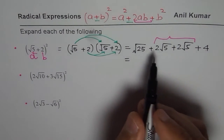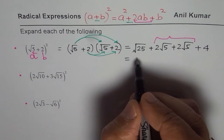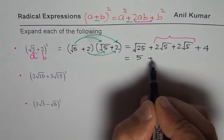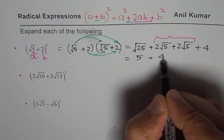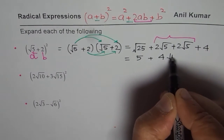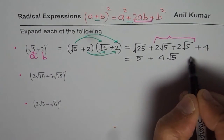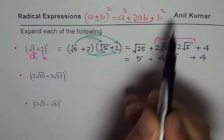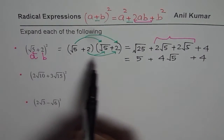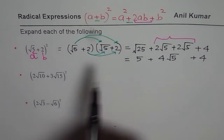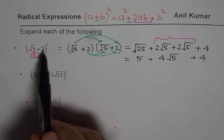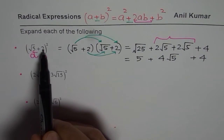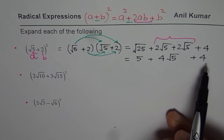Let's simplify. √25 is indeed 5, plus 2 + 2 is 4, so we get 4√5, and plus 4. If you had applied the formula directly: square of √5 is 5, 2 times a times b gives 4√5, and square of 2 is 4 — so it works perfectly.